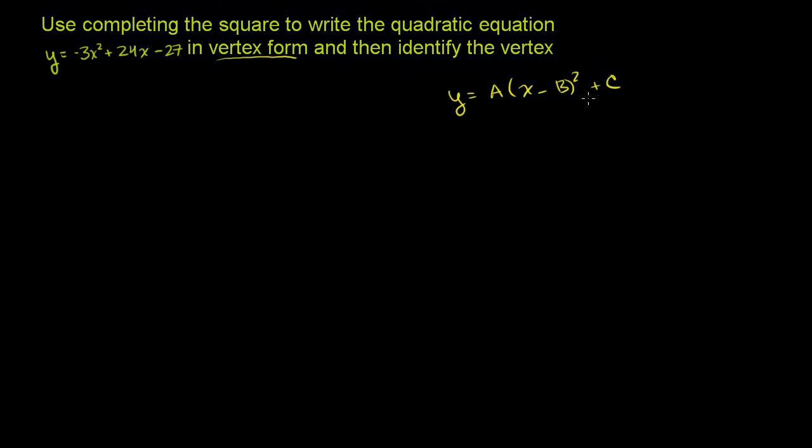And once you have it in vertex form, you'll see that you can identify the x value of the vertex as what value will make this expression equal to 0, so in this case it would be b. And the y value of the vertex, if this is equal to 0, then the y value is just going to be c. We're going to understand why that is the vertex, why this vertex form is useful.